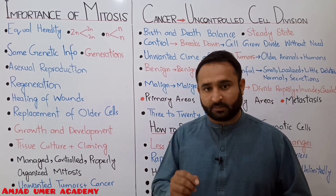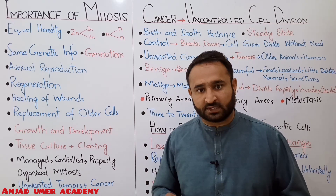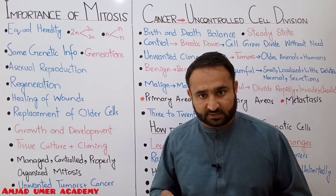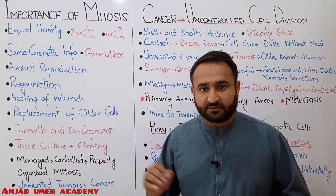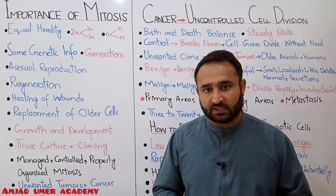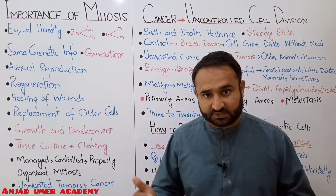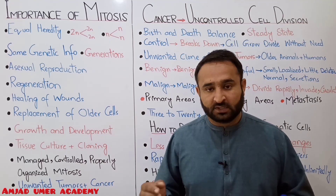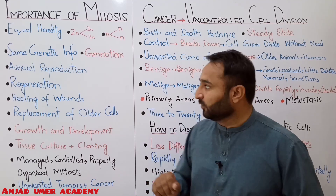All asexual reproduction occurs through mitosis. For example — cuttings, grafting, layering in plants — these are all examples of asexual reproduction. Binary fission is different from mitosis as it occurs in prokaryotes. All asexual means of reproduction — vegetative propagation, regeneration — all of this is mitosis. Asexual reproduction anywhere — in animals, plants, or humans — the same genetic information is transferred through mitosis.